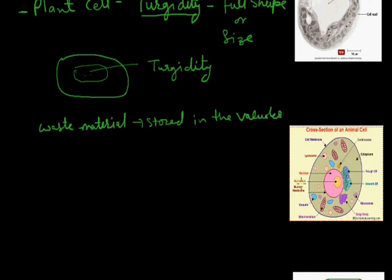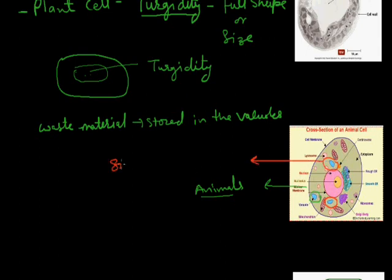This is the animal cell. This animal cell has vacuoles in more numbers. These structures are also vacuoles — they are very small in size and more in number as compared to the plant body.